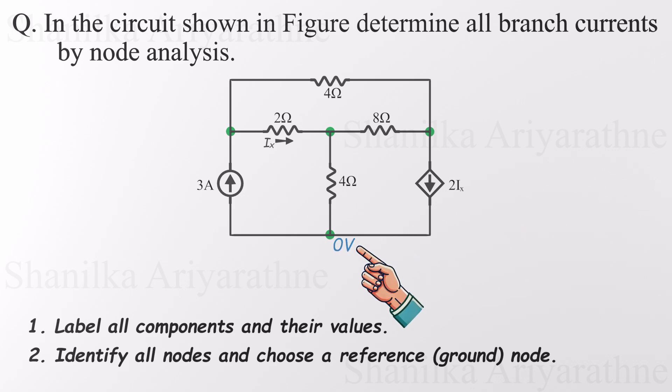It connects to both current sources and a resistor, so it's a solid choice. But don't stress too much about which one you pick. The final answers, the branch currents, will stay the same no matter what. Only the equations you write along the way might look a little different. All right, with the reference node set, let's keep going.